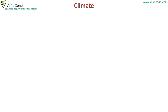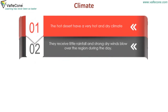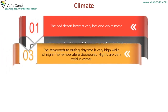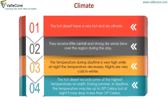Climate: The hot deserts have a very hot and dry climate. They receive little rainfall and strong dry winds blow over the region during the day. The temperature during daytime is very high while at night the temperature decreases. Nights are very cold in winter. The hot desert records some of the highest temperatures on earth. During summer, daytime temperature may rise up to 50 degree Celsius but at night it may drop to less than 10 degree Celsius.